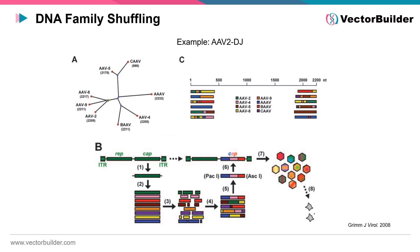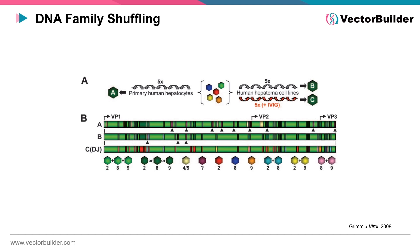DNA family shuffling is another technique used to generate AAV capsid libraries. In this method, the cap genes of various AAV serotypes are digested, followed by re-annealing through homology, resulting in new serotypes that are hybrids of their parental serotypes. The resulting capsid libraries offer a diverse repertoire of AAV variants, each possessing unique combinations of genetic traits. The intentional integration of diverse genetic elements through DNA family shuffling endowed AAVDJ with enhanced tropism, increased transduction efficiency, and improved resistance to neutralizing antibodies, discovered through iterative exposure to target cells with and without intravenous immunoglobulin selective pressure.